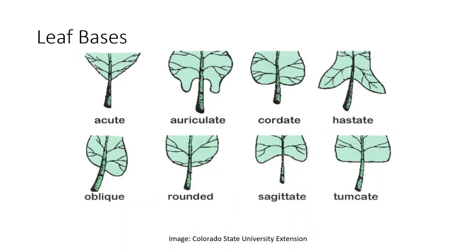For leaf bases — sometimes auriculate can help us determine one oak from another. Cordate is our heart shape. Rounded is pretty straightforward. An oblique base — you might think most leaves are somewhat symmetrical, and often that's true, but there are several species where this applies. Hackberry comes to mind, along with other elms in the same family. Our linden trees often have an oblique base — this uneven attachment. Just some characteristics to keep in mind.